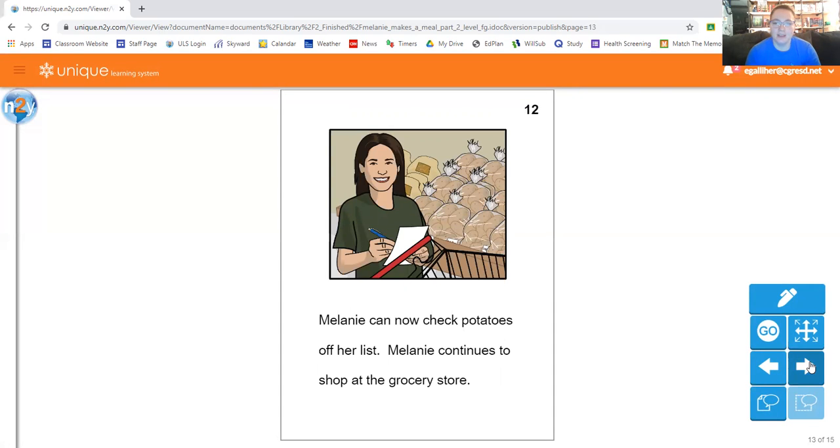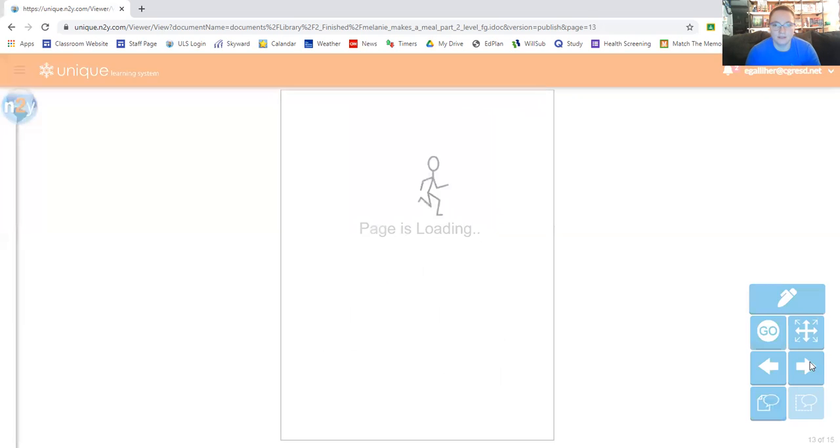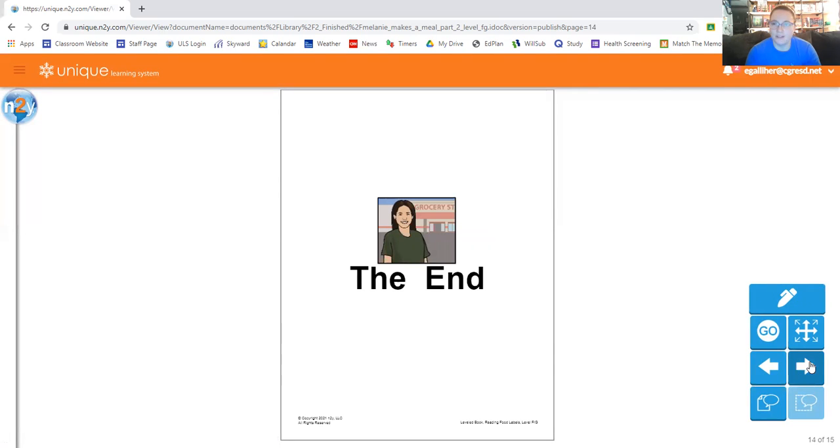Melanie can now check potatoes off her list. Melanie continues to shop at the grocery store. So she finishes all her list and she gets everything she needs and she heads home. Like I said, making a list is a great way to make sure you get everything you need at the grocery store. We try to plan out our meals so that way we can only have to go shopping maybe once a week or once every other week. So we plan out dinners and I'll look at a recipe. For instance, tonight I'm making pork loin with potatoes.